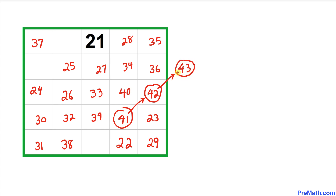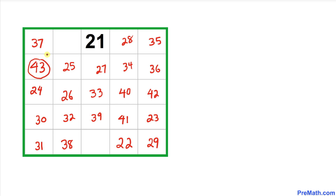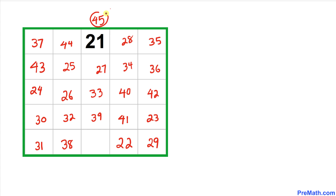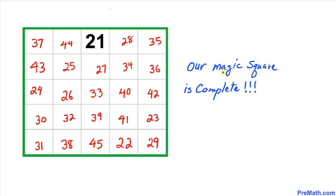From 42 we move diagonally to 43, but 43 is outside the square so it wraps to the opposite side. From 43 we move diagonally to 44, then diagonally to 45. Since 45 is also outside the square, it wraps to the opposite side. Our 5 by 5 magic square is now complete.